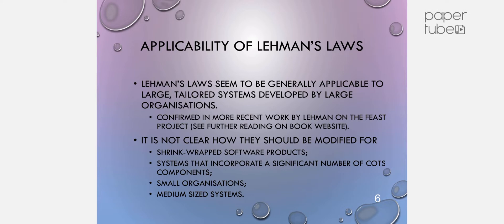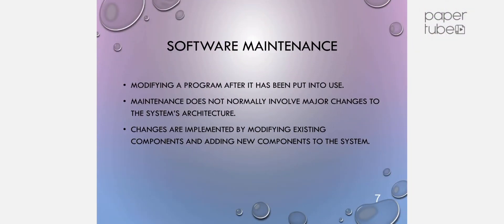Next is software maintenance: modifying a program after it has been put into use. Changes are incorporated after usage initiation. Maintenance does not normally involve major changes to the system architecture. Changes are implemented by modifying existing components and adding new components to the system.